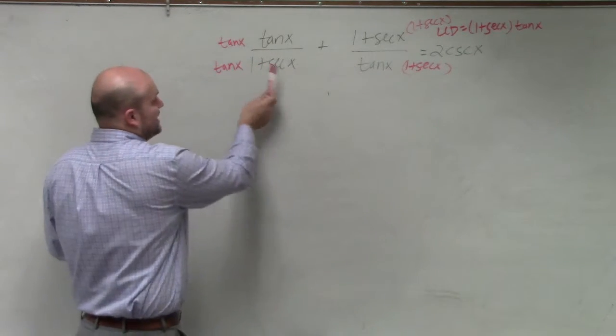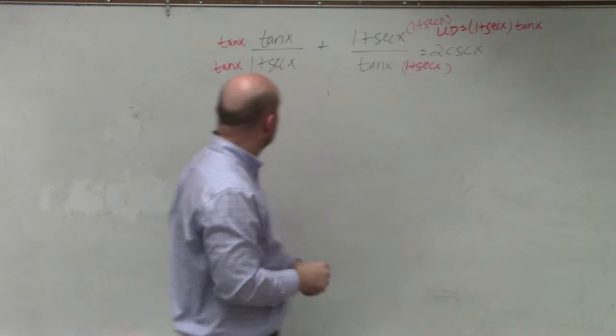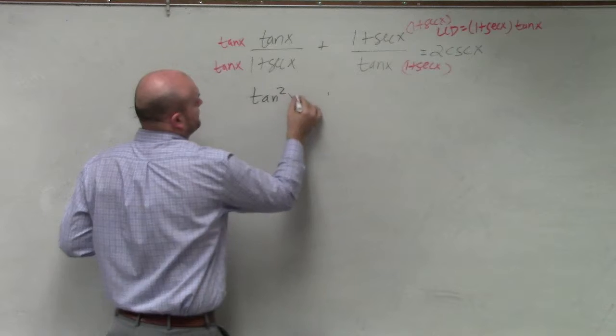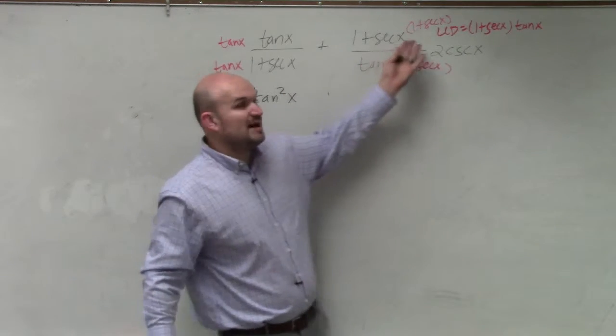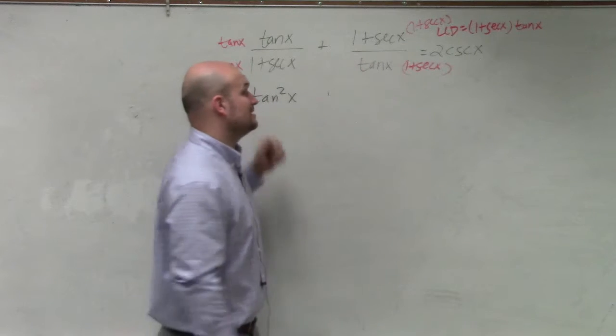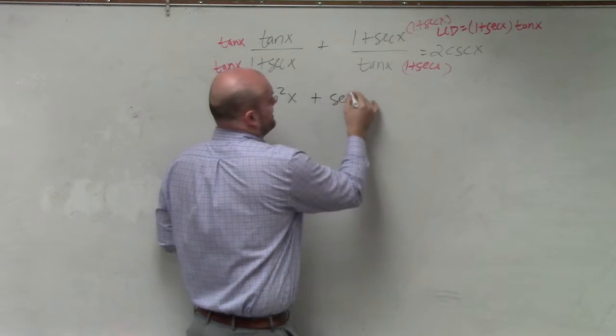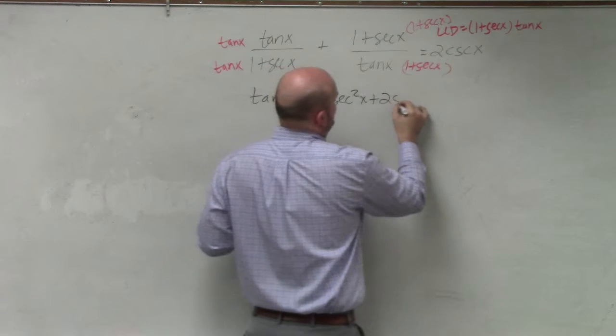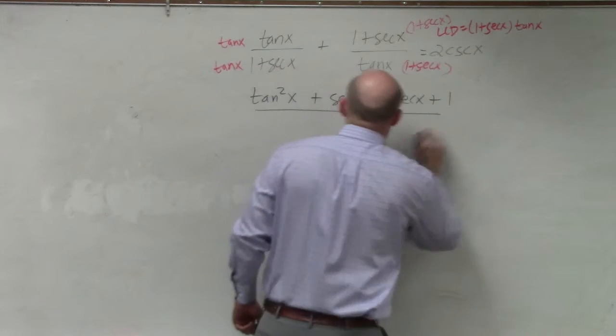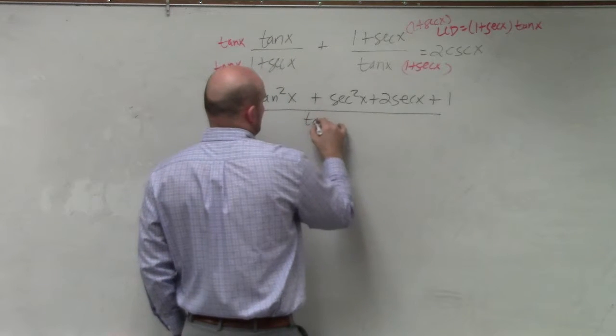So when I do this, I get tan²x. Guys, this is a binomial squared, correct? Binomial squared is going to give me sec²x + 2sec x + 1, all over our common denominator.